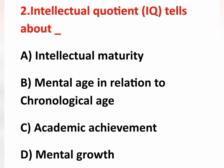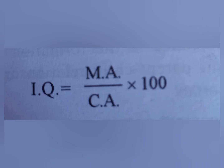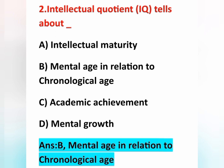IQ tells about mental age in relation to chronological age. The formula is: IQ = (Mental Age / Chronological Age) × 100. So the correct answer for the second question is option B — mental age in relation to chronological age.